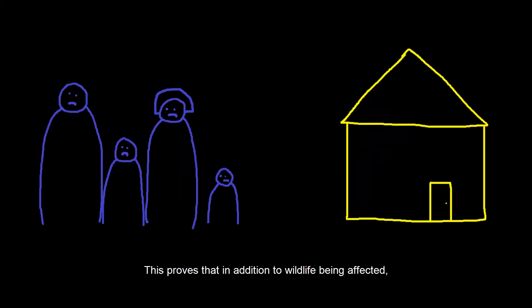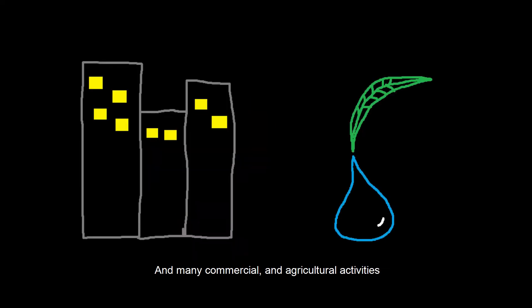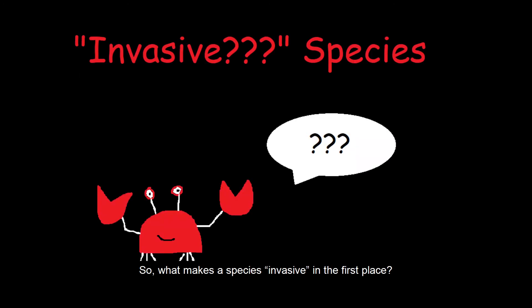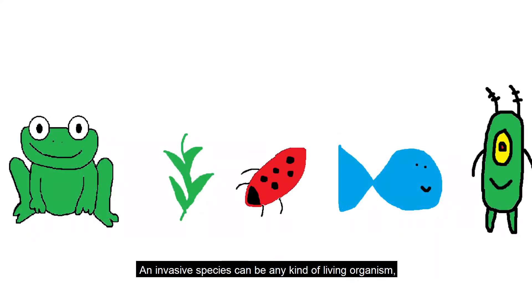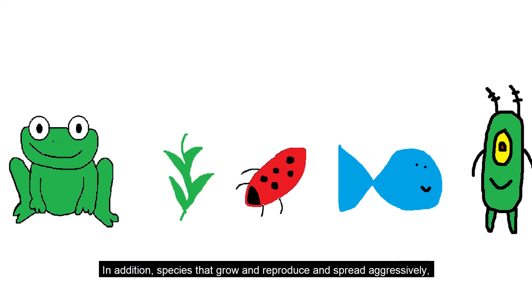This proves that in addition to wildlife being affected, our communities are also at risk from invasive species. The impacts of invasive species on our natural ecosystems and economy cost billions of dollars each year, and many commercial and agricultural activities depend on a healthy native ecosystem. An invasive species can be any kind of living organism — plants, insects, fish, etc. — that is not from that ecosystem and disrupts everything in it. Species that grow, reproduce, and spread aggressively with potential to cause harm are considered invasive.